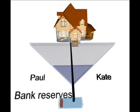Let's say Paul is buying a house from Kate for $500,000. The bank then uses a portion of its reserves in order to expand its balance sheet. Note that the proportions are grossly exaggerated — in reality, a very small portion of the bank's reserves are needed in order to create the loan.